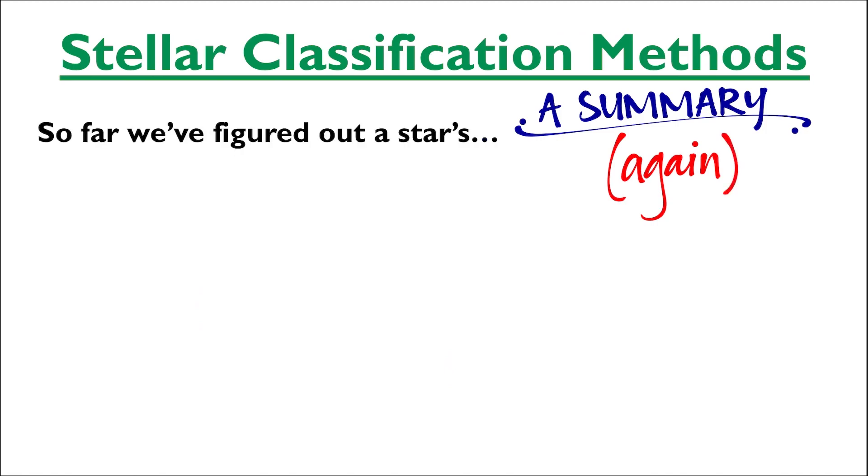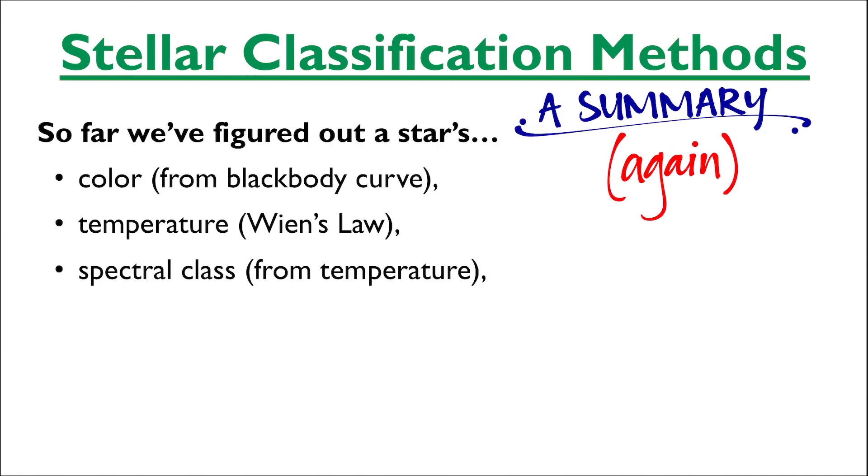So far, we've been able to determine the star's color from its blackbody curve, its temperature from Wien's Law, and its spectral class from its temperature.